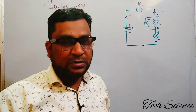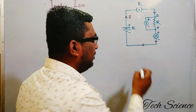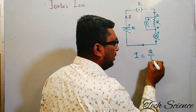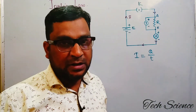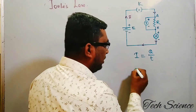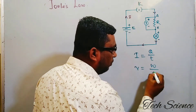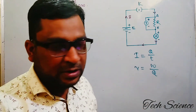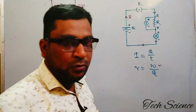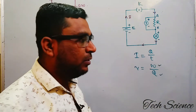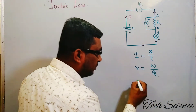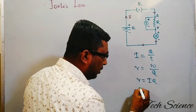Let me revise some basic terminologies. Current, denoted by the letter I, is the charge flow per unit time — I = Q/T. The charge flow per unit time through a cross-sectional area of a conductor is called electric current. Potential difference is the amount of work done required to move a unit positive charge from one point to another point, given by V = W/Q. We also already know Ohm's Law.